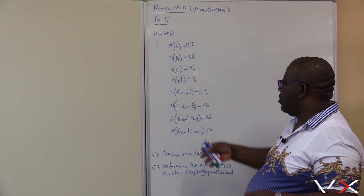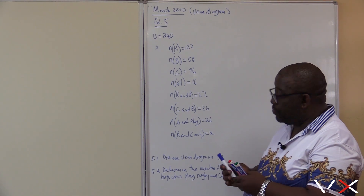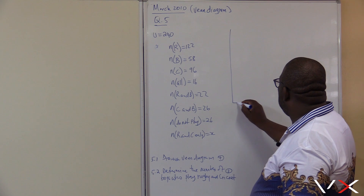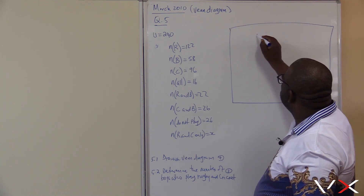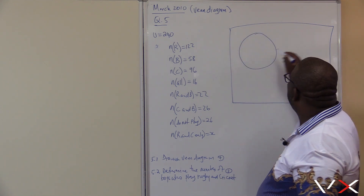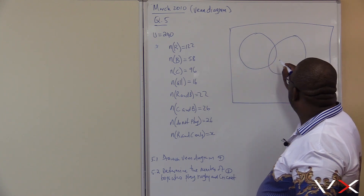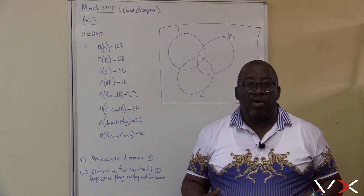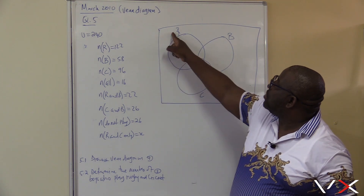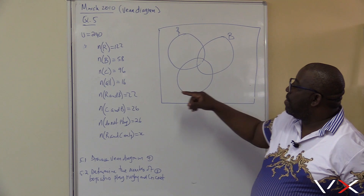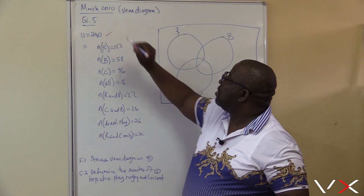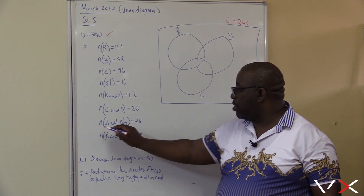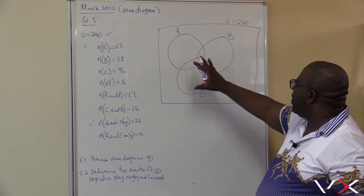The number of boys that play rugby is 122. The first question wants us to draw an event diagram. We know that there are three events happening here: rugby, basketball, and cricket. The total number of boys in this school is 240 — that is the sample space. We also know that there are 26 learners who did not play any sport; they are not part of those events.